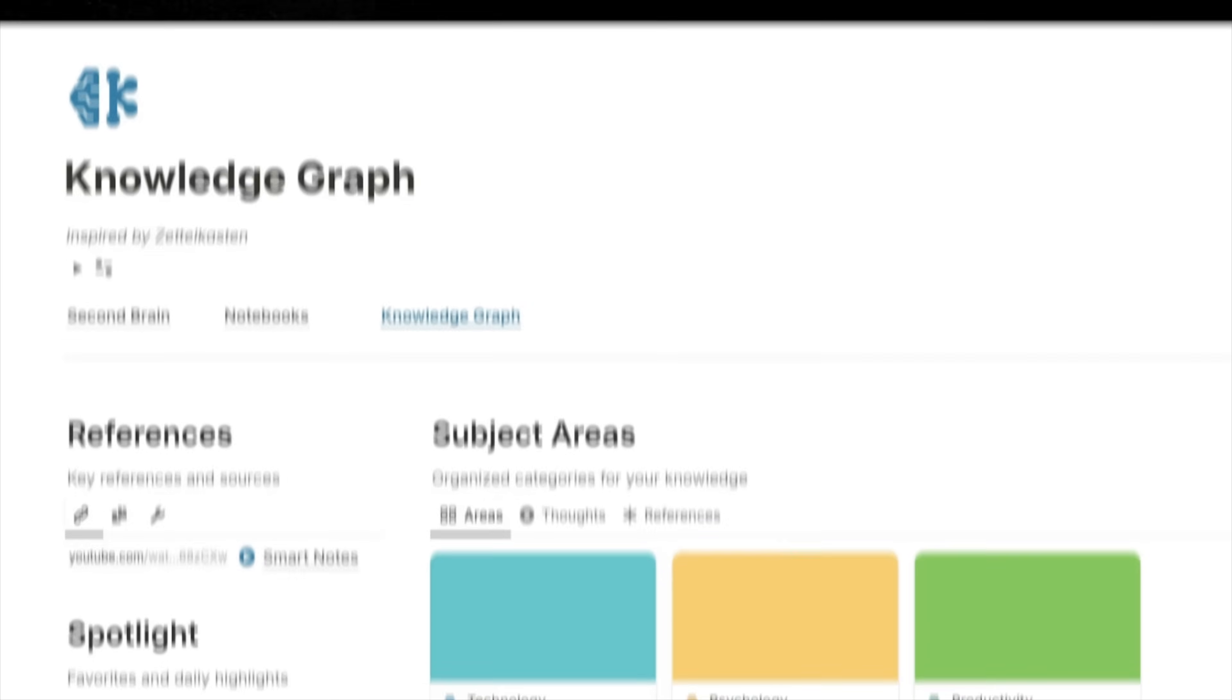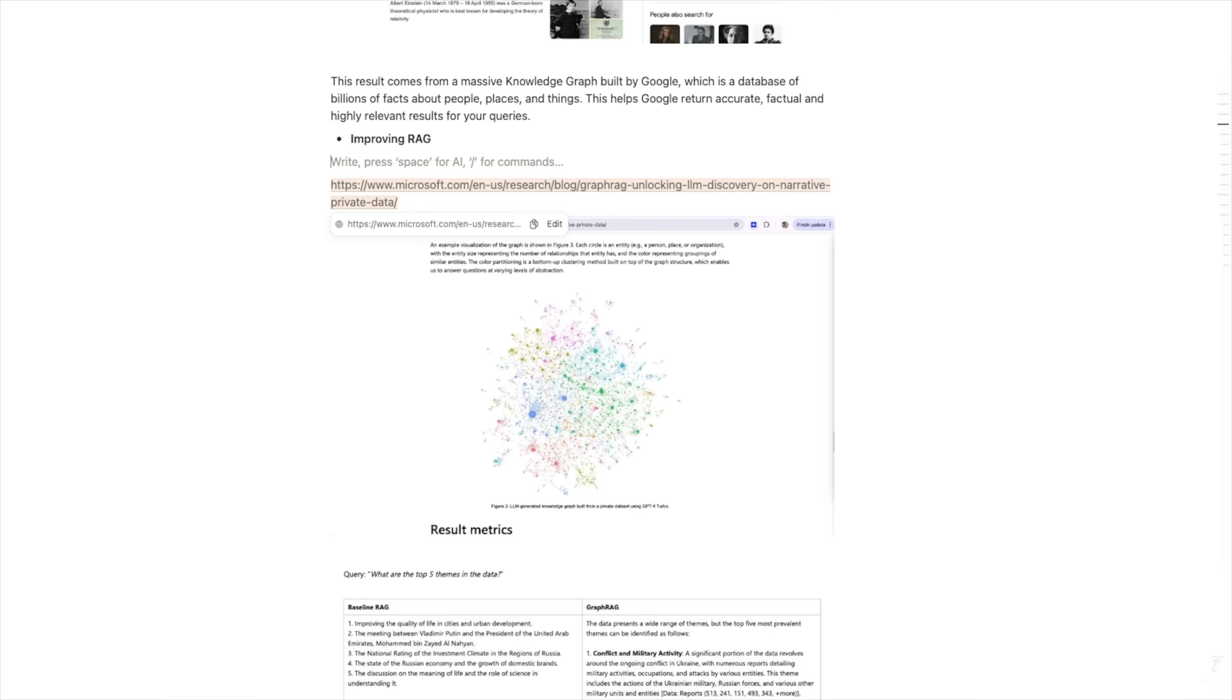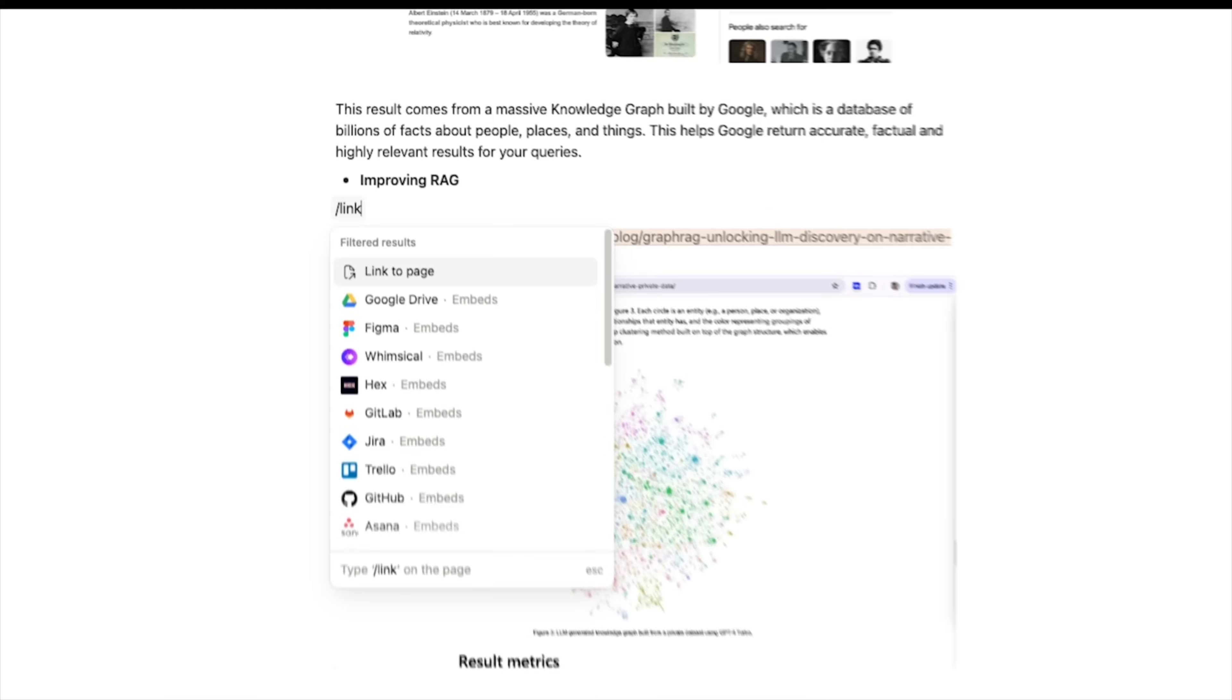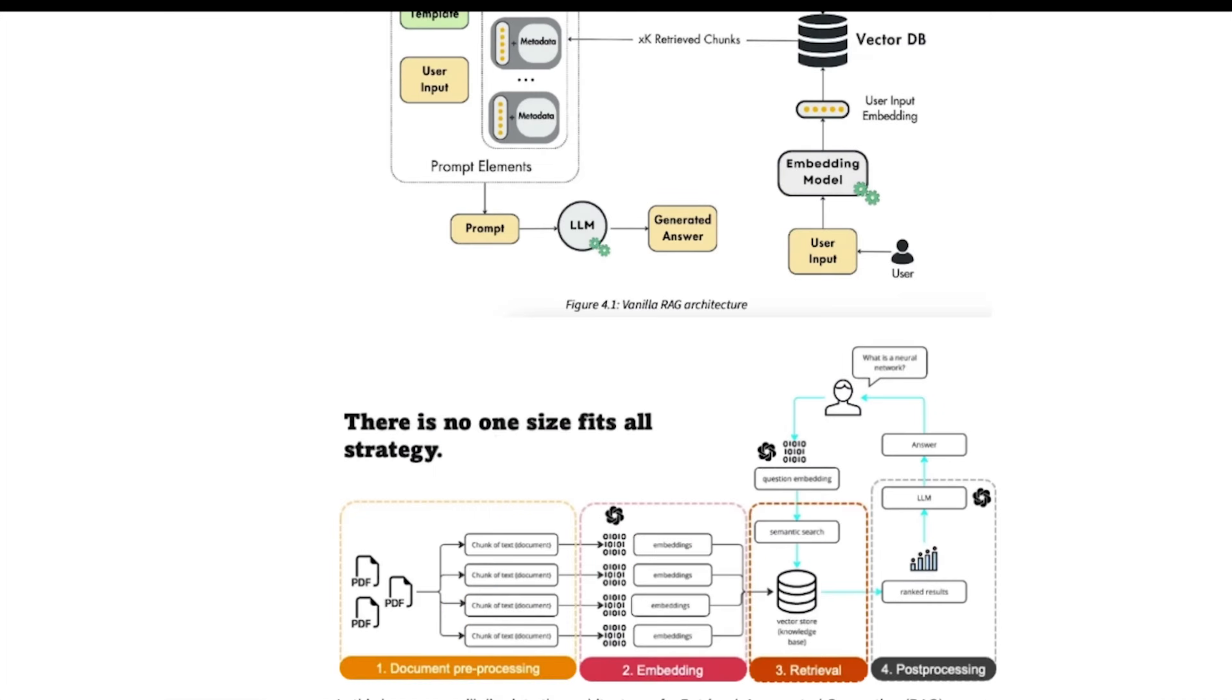Actually, you can use any structure that makes sense to you really. So once you have organized the notes into a reasonable structure, it's time to make connections with what you already know. For example, in Notion, you can link one page to another so you can hop between related topics.